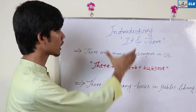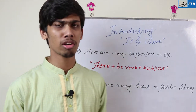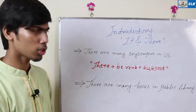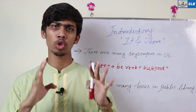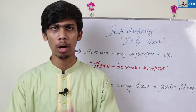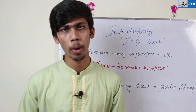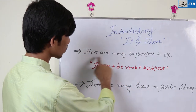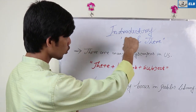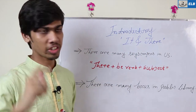The first topic is introductory 'it' and 'there.' Introductory 'it' and 'there' means the sentence starts with either 'it' or 'there.' There are two of them; when the sentence starts this way, it is called introductory 'there.'